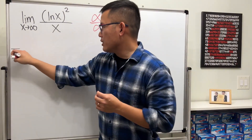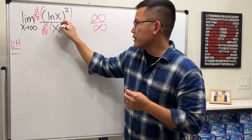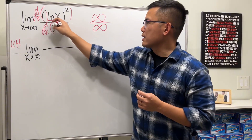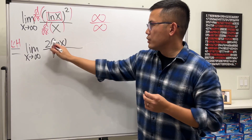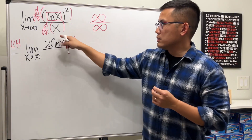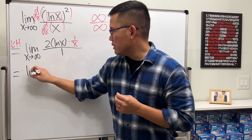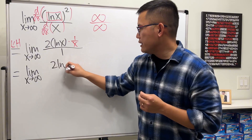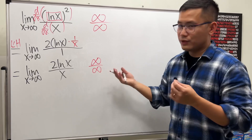Differentiate the top and differentiate the bottom. For the top, treat (ln x)² using the power rule: bring the 2 to the front, leaving 2 ln x, then use the chain rule and multiply by the derivative of ln x which is 1/x. The derivative of x on the bottom is just 1. Rewriting, this is the limit as x approaches infinity of 2 ln x over x, but plugging in infinity gives infinity over infinity again.